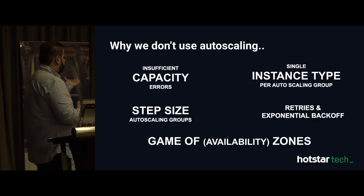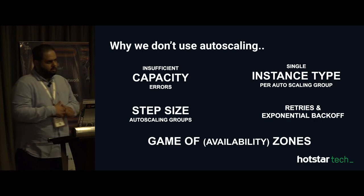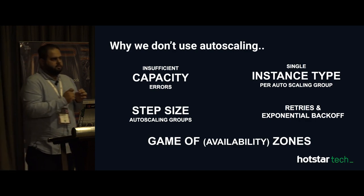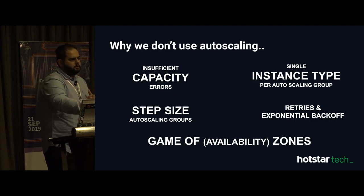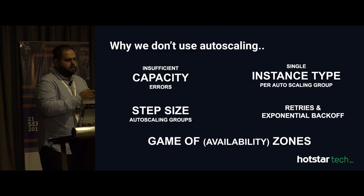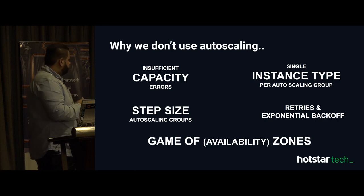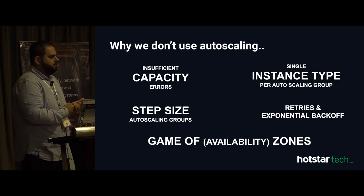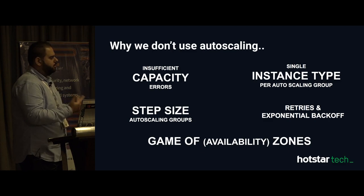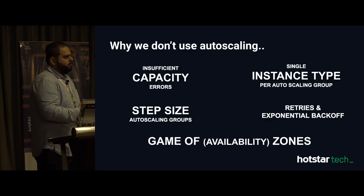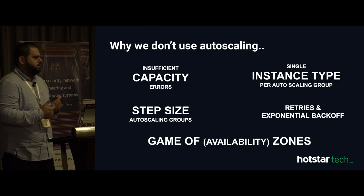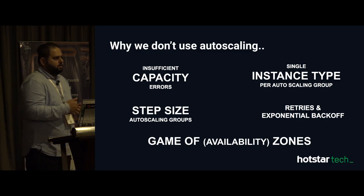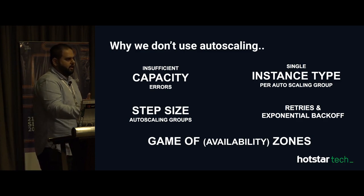Another challenge is the step size of the auto-scaling group. The way it works is when you raise capacity from 10 to 100, it launches at a step size of 10 — every 30 seconds it tries to launch 10 servers. That is very slow for us; we are talking about asking AWS to give us 400 to 500 servers at every level. Even if you increase those limits, it is very slow.